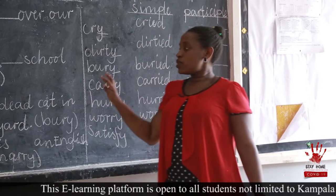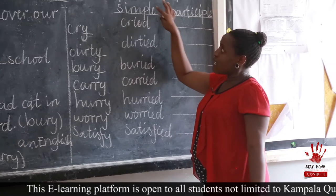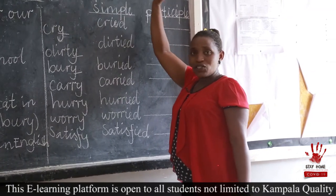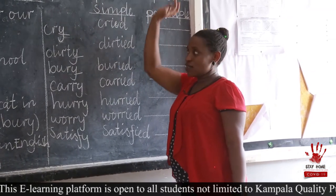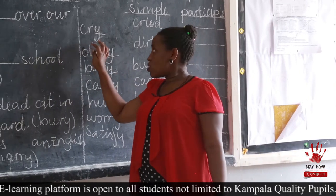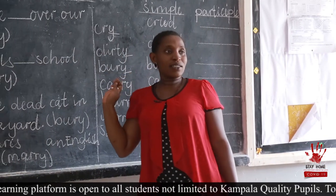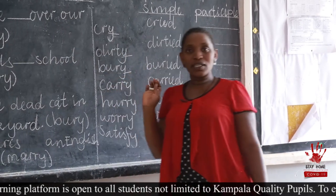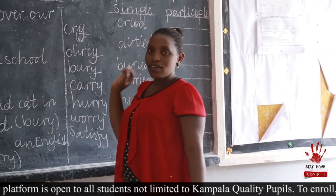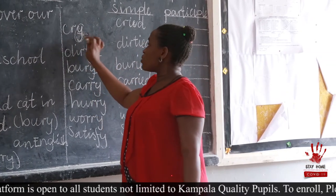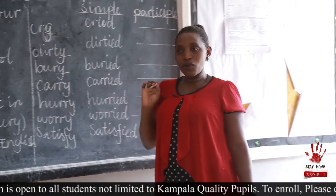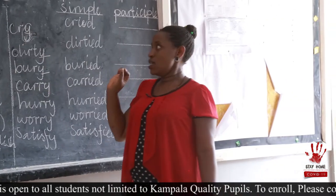Now, today we're looking at the verbs that end with Y, but in this particular case, Y is preceded by a consonant. For these ones, we drop letter Y, or we change letter Y to I and then we put ED.